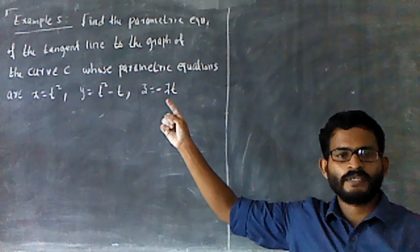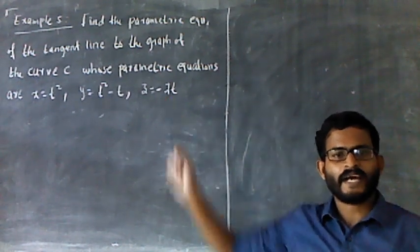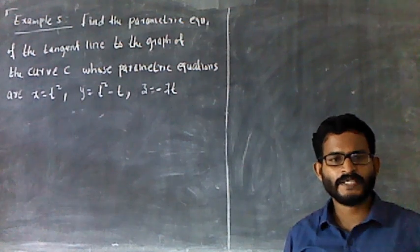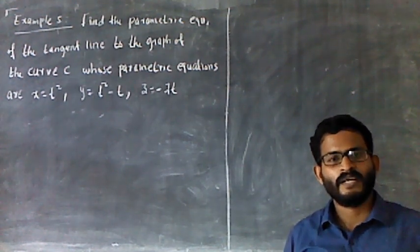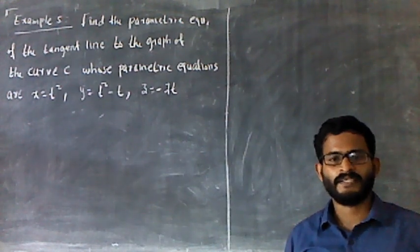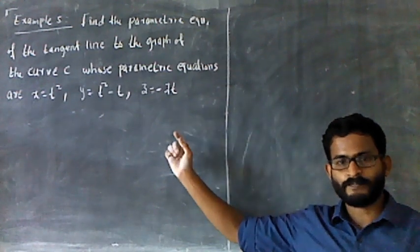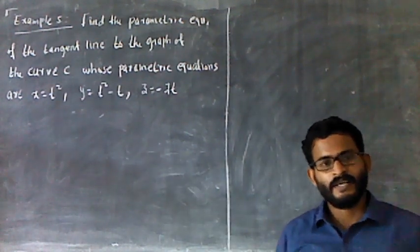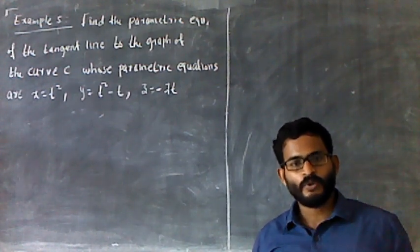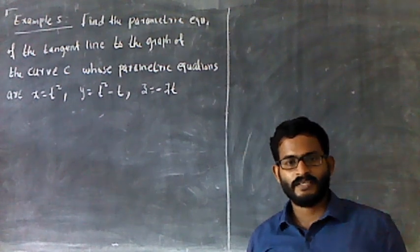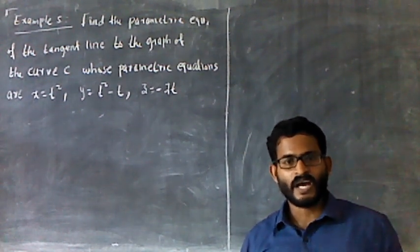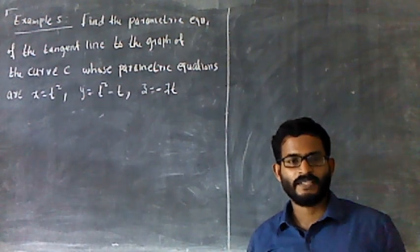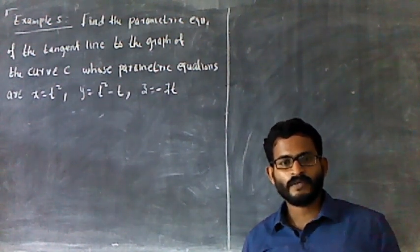Finally, the parametric equation of the tangent line to the graph. Those parametric equations are x equals c to t squared, y equals c to t squared minus b. That is the parametric function. We have the parametric function, so we have a vector value function.